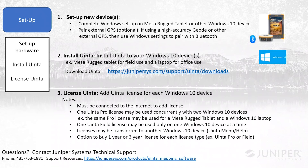Next, you generally want to install UINTA on any device you plan to run the software on. A typical situation would be installing UINTA on an office laptop or computer, and also on your mobile device like a Mesa rugged tablet. Installing it this way allows you to use cloud synchronization, where you can create a cloud project and transfer data between the two devices. You can find the download file at the provided link, and once installed you can then license UINTA.